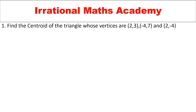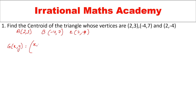Find the centroid of a triangle whose vertices are (2, 3), (-4, 7), and (2, -4). So let us take this point as A(2, 3), B(-4, 7), and C(2, -4). We need to remember the centroid formula. The centroid is denoted by G. The formula for centroid is: G = ((x1 + x2 + x3)/3, (y1 + y2 + y3)/3).